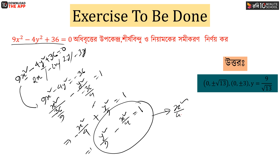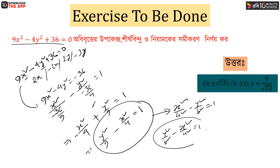We have x² divided by a² minus y² divided by b² equal to 1, and also y² divided by b² minus x² divided by a² equal to 1.